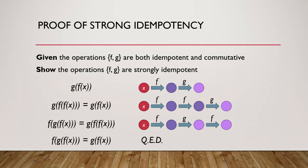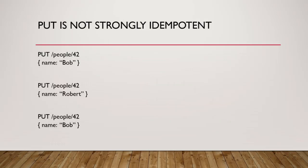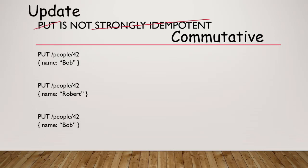Now we can say something more mathematically precise than 'PUT is not strongly idempotent': PUT is not commutative. That's the reason it didn't work. And we can say something stronger: we made an assumption that PUT is doing an update, so it's not really that PUT is not commutative — it's that update is not commutative. That's the real problem.